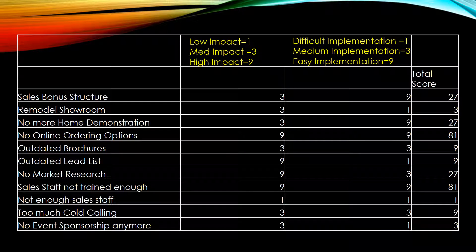This is the actual matrix — an XY matrix or a CE matrix, cause and effect matrix. All you're going to do now is list out all of those inputs, all the bones from that fish, all the things that contribute to that effect of having low sales. The categories don't matter. You're just listing them out in any particular order, each of those items. We'll walk through the sales bonus structure example.